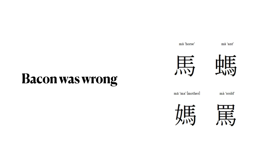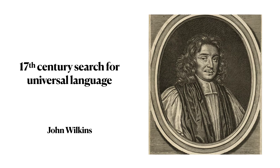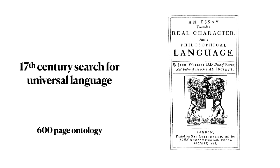Bacon was wrong. We see here a brief illustration of this, where four Chinese symbols are illustrated, each of which contains part of the symbol — the symbol 'ma' for horse — so the pronunciation 'ma' is seen in the symbolic representation of these other three words. This search, however, continued throughout the remainder of the 17th century. Many intellectuals at the time got caught up in this search, including Gottfried Leibniz, who is otherwise well known for calculus, and John Wilkins. John Wilkins, in particular, published a 600-page ontology that attempted to lay out the ideas or concepts that would underlie such a system.